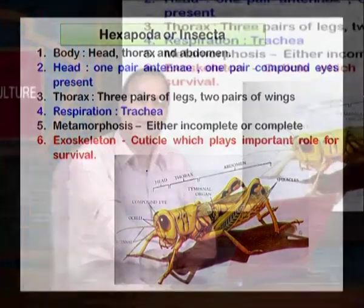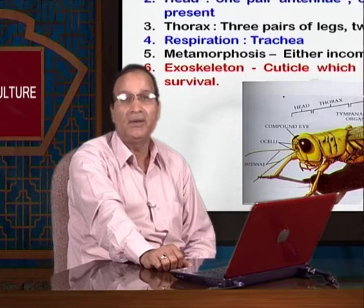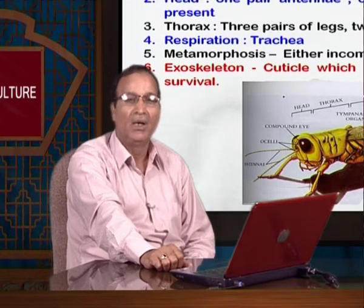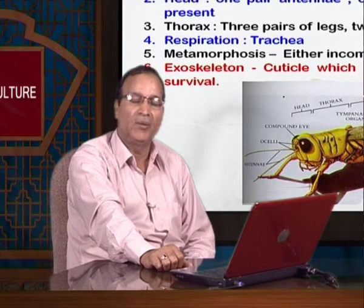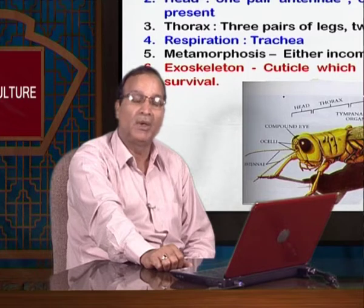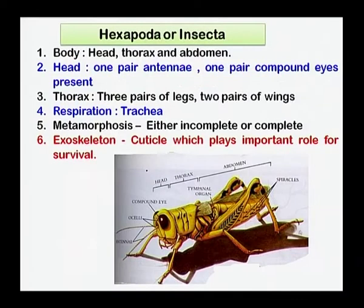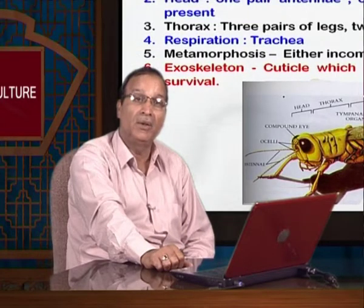The class Insecta, which is also known as Hexapoda: the body is divided into three parts — head, thorax, and abdomen, from anterior to the posterior part. The head carries two important appendages: antennae and the mouthparts. The thorax is the middle part and the abdomen is the posterior part. Respiration in class Insecta takes place through the trachea, which are the respiratory tubes, and that is why they are known as tracheate arthropods.